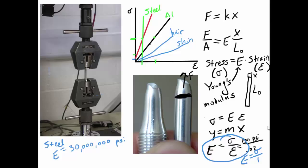Wood, something like 2 million PSI. Diamond, much higher than steel, about 170 million PSI. So hopefully this gives you some idea as to what Young's modulus means. And you're now comfortable with the idea of stress, strain, and Young's modulus.